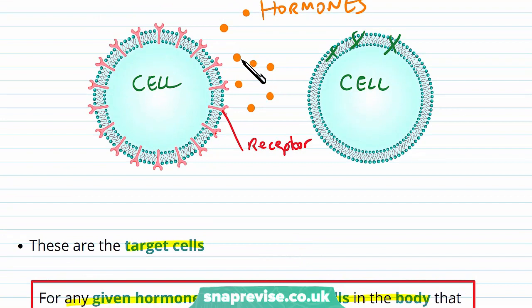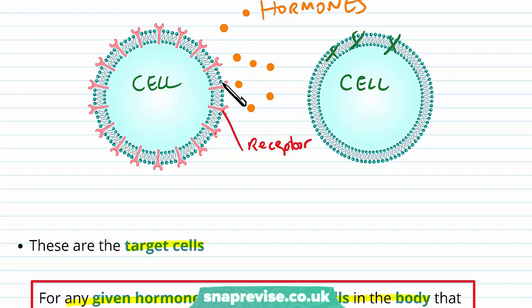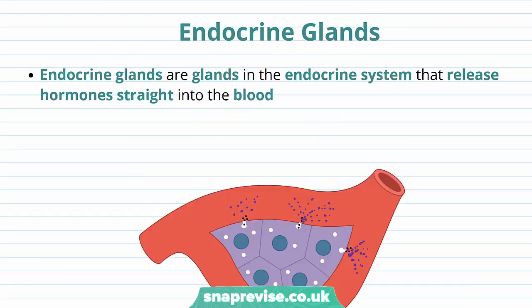One hormone will have a specific protein receptor of the right shape, and another hormone will have a different receptor. Different cells might have different receptors, so it's all very specific and limited.